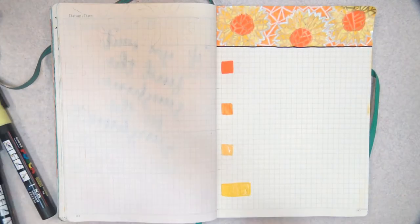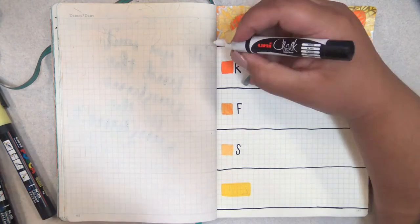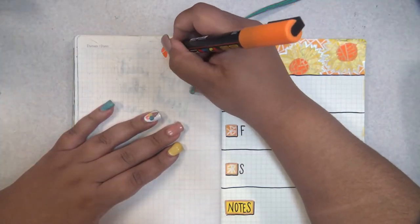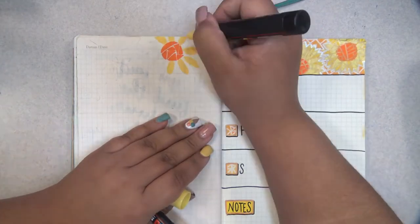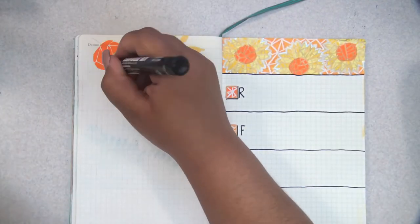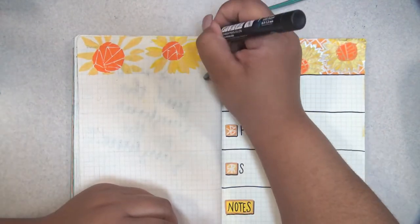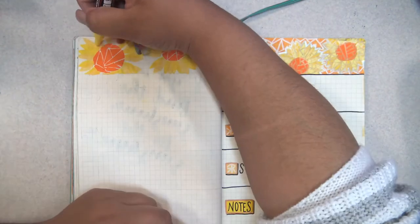For the days of the week and the note section at the bottom, I added a sort of gradient using the different yellows I used in the mosaic to make the box for the date, and I used my white Uni chalk pen to make a sort of mosaic pattern on the colored blocks to match the background of the mosaic at the top.